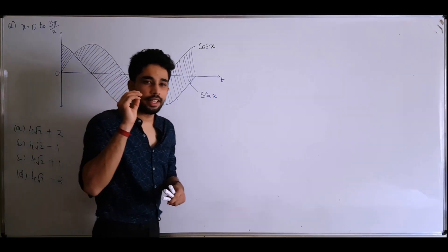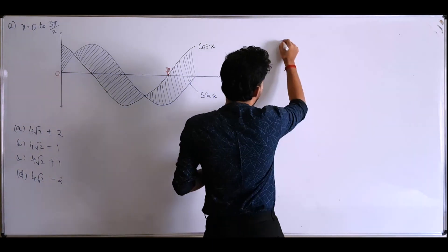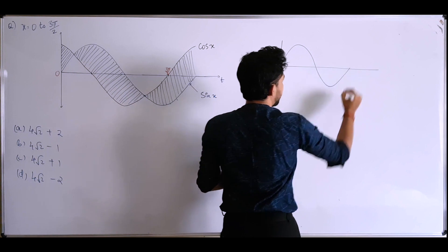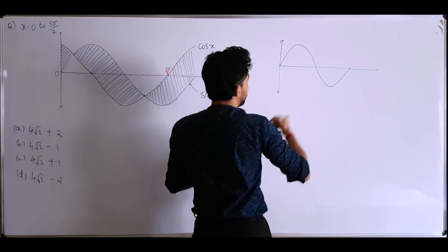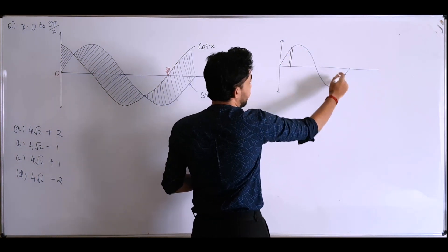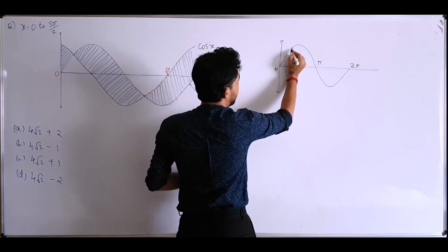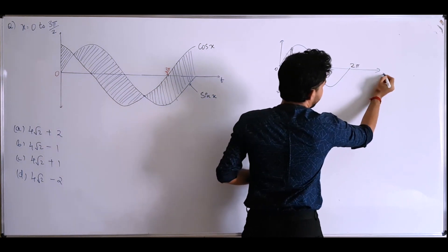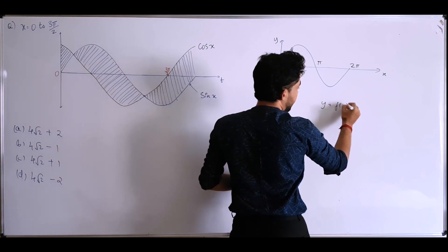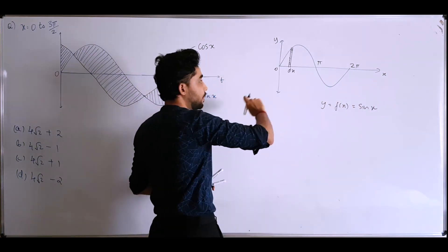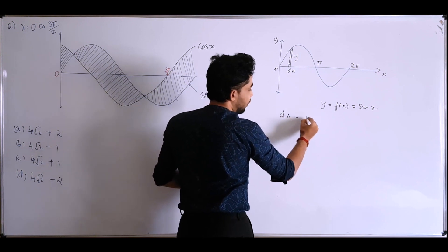Before we start, let's do a quick review of the area under a curve. Suppose I have a sin graph and I'm trying to find the area under it. We consider a strip of width dx and length y, so the area of the small strip is y·dx. Our function here is sin x.